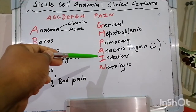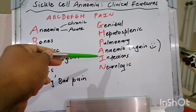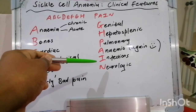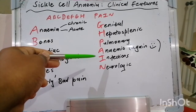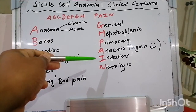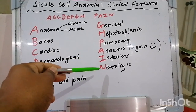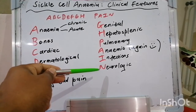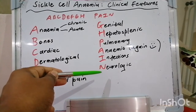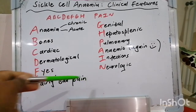I is for infections. Sepsis, particularly in asplenic patients who are susceptible to infections like meningitis, pneumonia, and encapsulated organisms. Osteomyelitis because of salmonella and gram-negative organisms. And lastly, N for neurological sequelae in the way of ischemic stroke, intracerebral hemorrhage, septic emboli, spinal cord infarct or compression, vestibular dysfunction, sensory hearing loss, and cognitive failure.